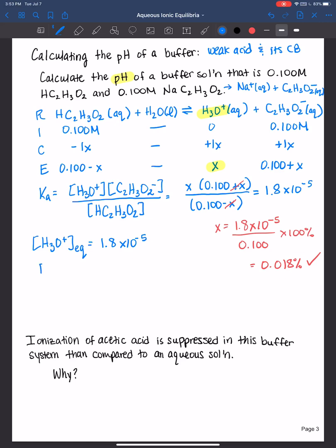The pH is equal to the negative log of the hydronium ion concentration, which is equal to 4.74.